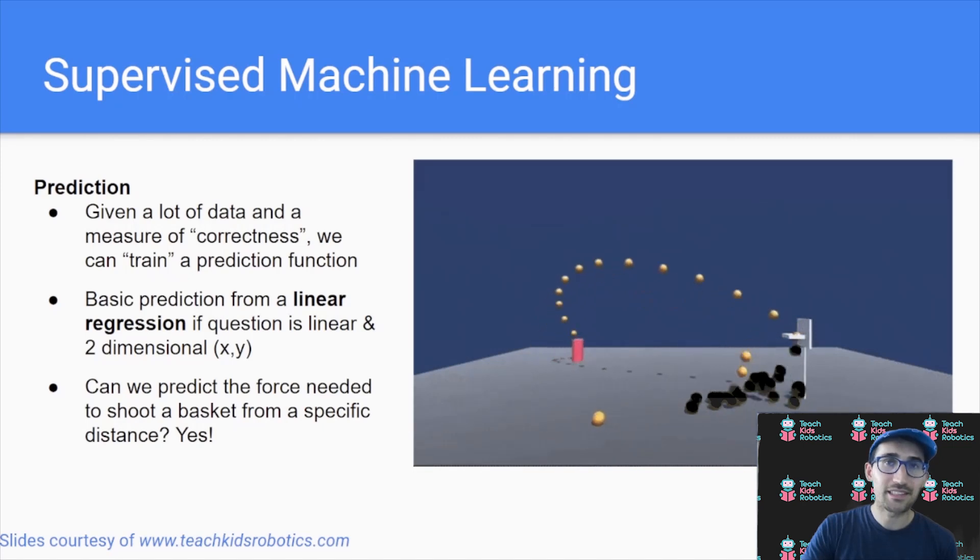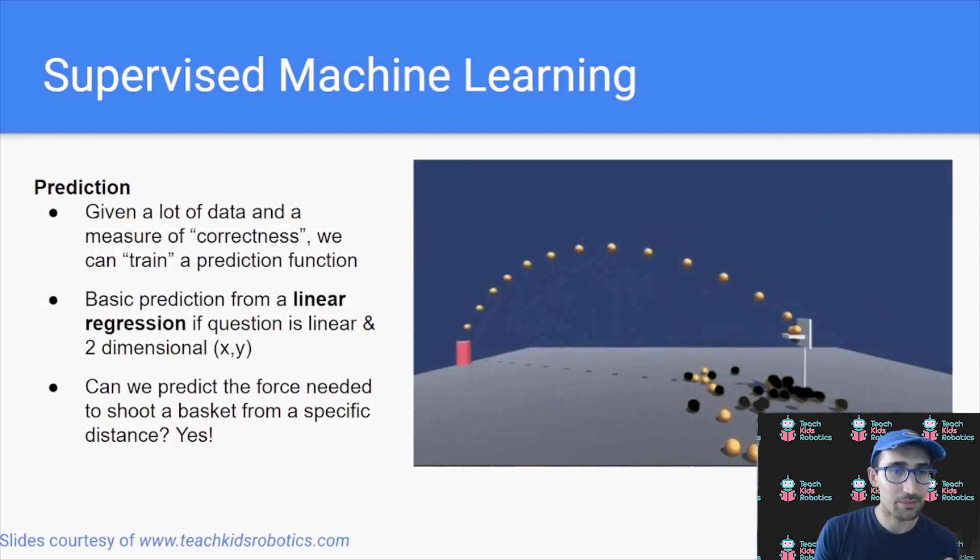Let's talk a little more now in detail about the supervised machine learning where we have a lot of labeled data. One use case that's very interesting is prediction. Given a lot of data and a measure of correctness, we can train or predict a function that allows us to predict a given action. One of the most basic forms of prediction are known as a linear regression, if the question is linear and the underlying answer can be represented in two dimensions. The linear regression effectively allows us to find a line based on a series of points.